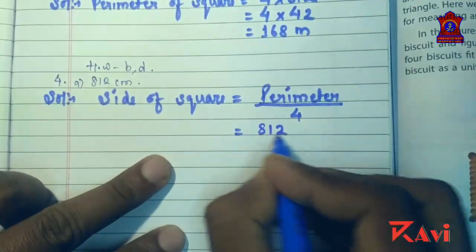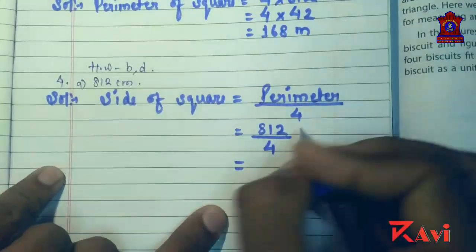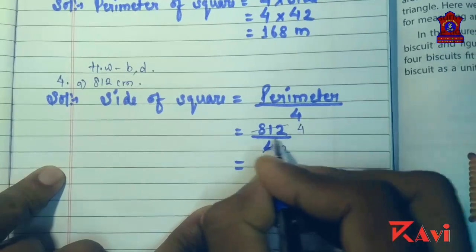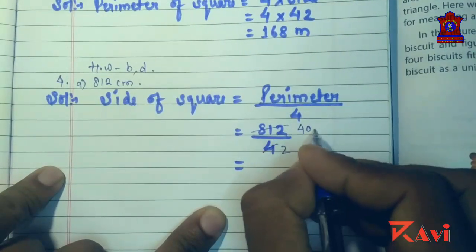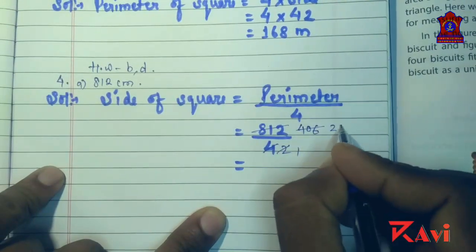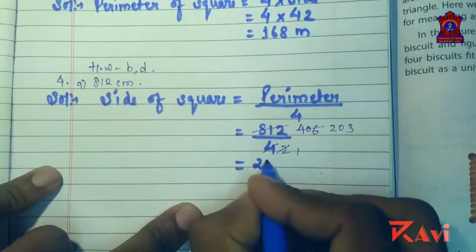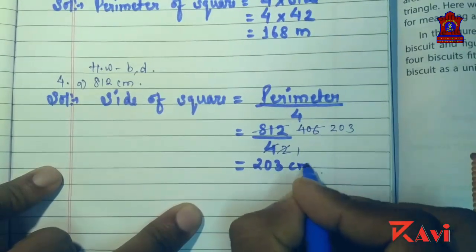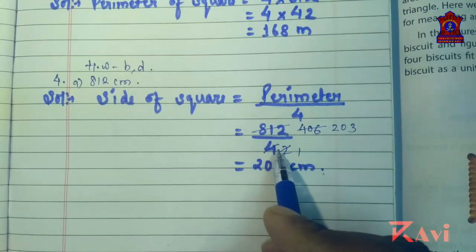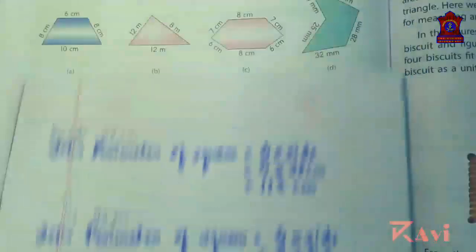Dividing 812 by 4: we can simplify — 2 twos are 4, 2 fours are 8, giving 203 centimeters. Like this you can cut and find the answer. If you don't know how to cut, you can simply divide and write the answer.